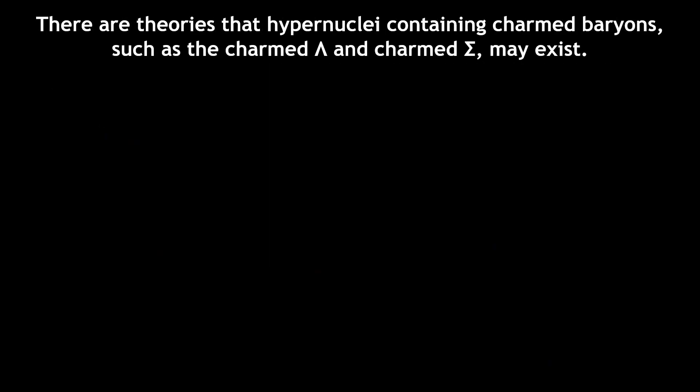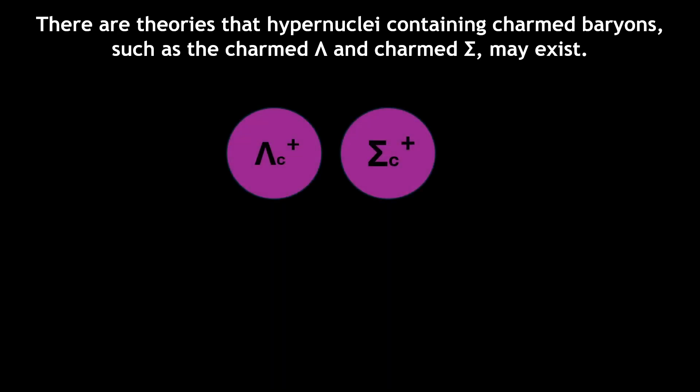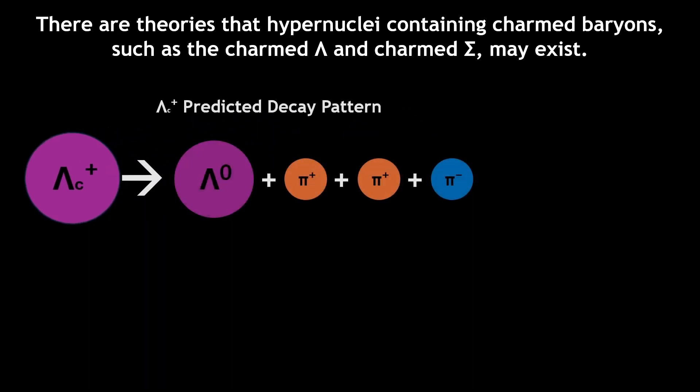There are also theories that predict the existence of charmed hypernuclei that may contain charmed baryons, such as charmed lambdas and charmed sigmas. The charmed lambda's predicted decay pattern allows us to speculate about how a charm xi hypernucleus may decay, if they exist.